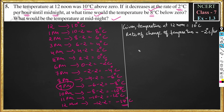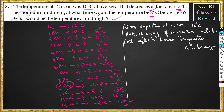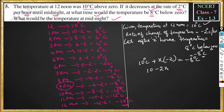Now at what time would the temperature be 8 degrees Celsius below zero? Let us assume after x hours the temperature becomes minus 8 degree Celsius, that is 8 degrees below zero. So let after x hours, temperature is equal to minus 8 degree Celsius. This becomes 10 degree Celsius plus x hours into minus 2, because for each hour temperature decreases by minus 2 degrees. So for x hours temperature decreases by x into minus 2 degrees, and this will result in minus 8 degree. So this becomes 10 plus x times minus 2, that is 10 minus 2x, which equals minus 8.